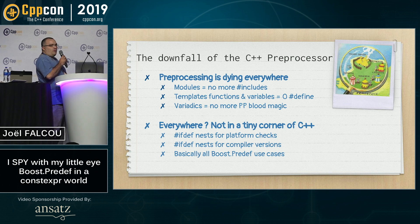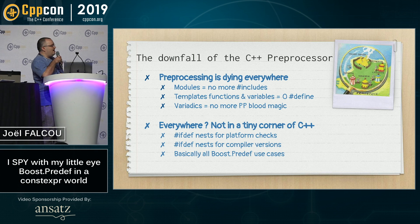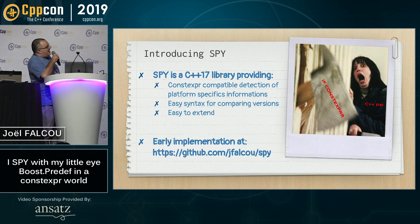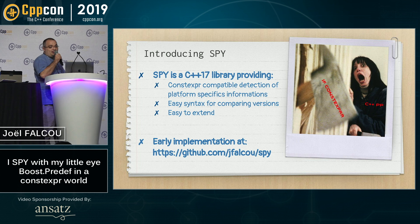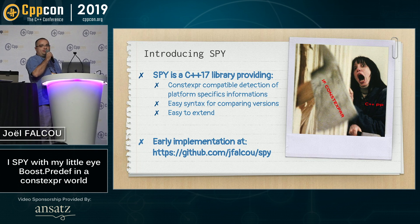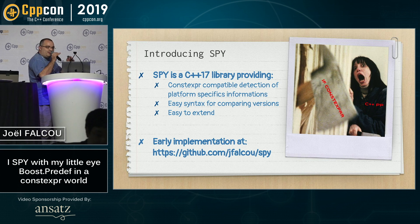I spent quite a lot of time writing template metaprogramming stuff, and I fell in love with if constexpr, which is probably the next best thing since sliced bread. What I wanted to do is have a way to not have #ifdef inside my if constexpr, so I made a small library called "spy", which is basically a constexpr-compatible predef library. You can write if constexpr around the version of your compiler, the presence of given features of your platform, and so on.